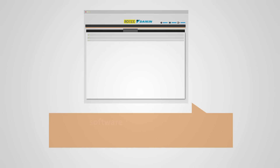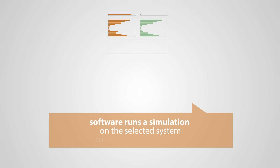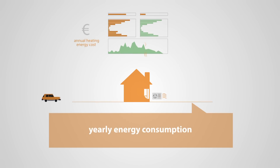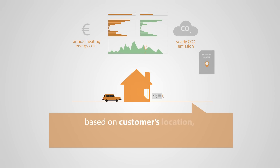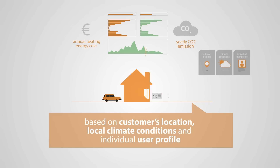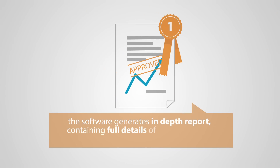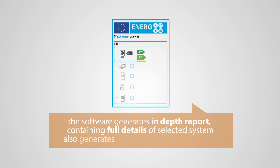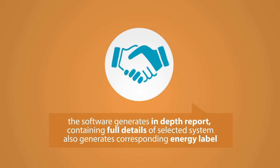Simulation. During the next step the software will run a simulation on the selected system. It will calculate the expected yearly energy consumption, yearly CO2 emissions and the seasonal efficiency of the system based on the customer's location, the local climate conditions and his individual user profile. When ready, the software generates an in-depth report containing full details of your selected system. Moreover, it also generates the corresponding energy label. This will undoubtedly convince your customer.